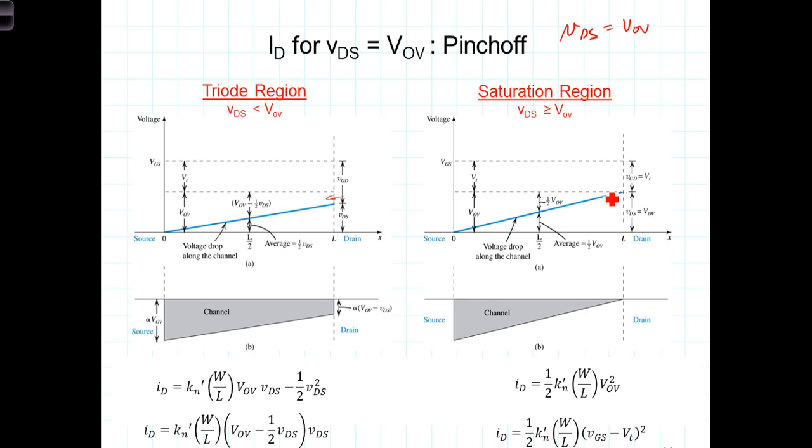But let's look at what happens to the current when VDS equals VOV. So, taking this equation right here and replacing VDS with VOV, we get then that I sub D is equal to K sub N prime W over L times VOV minus one half. VOV is just one half VOV times VOV gives us then, if we pull the one half out in front, K sub N prime W over L VOV quantity squared.